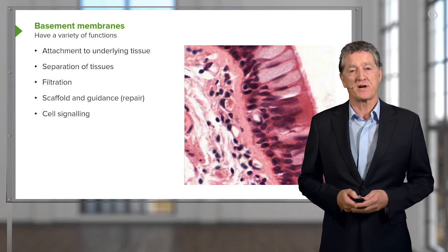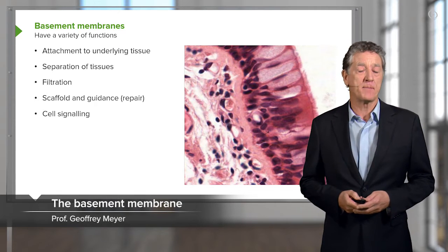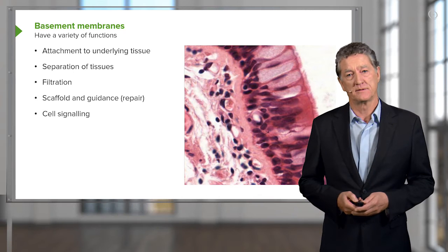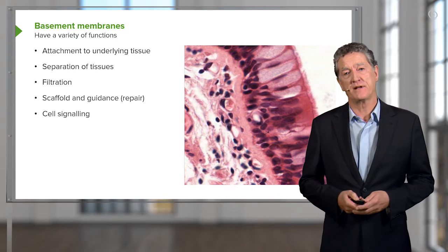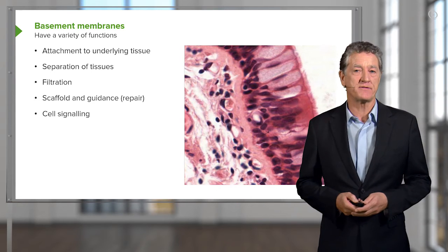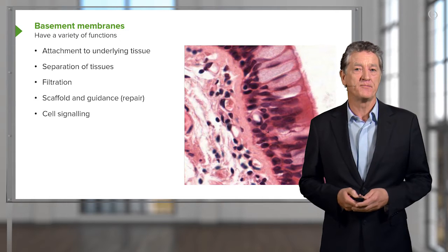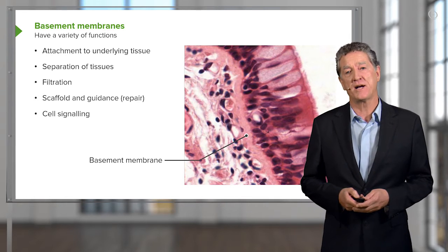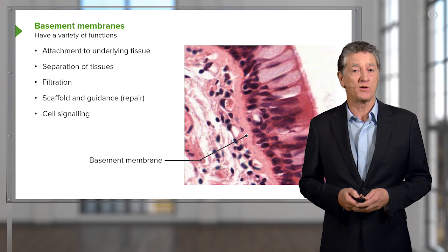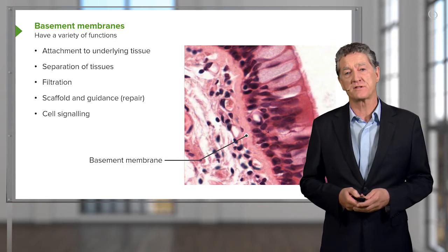Another very important structure to consider when talking about epithelium is the basement membrane. Here is an epithelial surface — it happens to be pseudo-stratified ciliated epithelium, and it's supported by a basement membrane, which appears quite thick here. In other epithelia, it's often difficult to see.